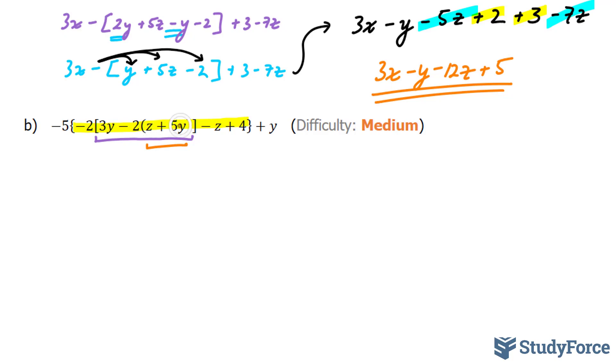Now since z and 5y are not like terms, you need to liberate these two terms by multiplying this negative 2 inwards. Let's go ahead and do that.